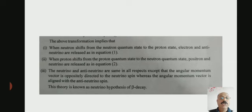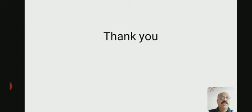The neutrino and anti-neutrino are the same in all respects except that the angular momentum vector is oppositely directed to the neutrino spin, whereas the angular momentum vector is aligned with the anti-neutrino spin. This theory is known as the neutrino hypothesis of beta decay. Thank you.